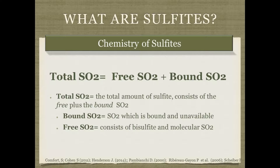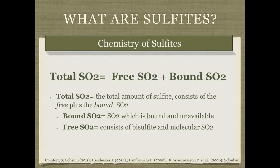A little bit of chemistry: it's important to understand the differences between types of sulfites. Total SO₂ is simply free SO₂ plus bound SO₂. The bound SO₂ is bound and unavailable. When I was first learning, I would measure, add sulfites, measure afterwards, and it was as if they had vanished — a certain portion becomes bound and unavailable. The free SO₂ is what is biologically and biochemically active, consisting of bisulfite and molecular SO₂.